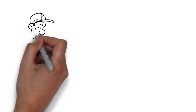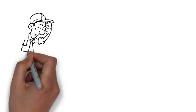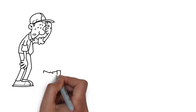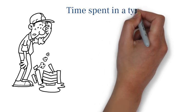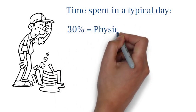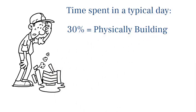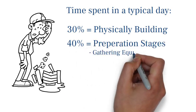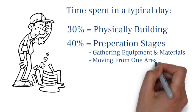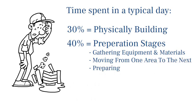Of course, it's hard to obtain completely accurate data on the actual productivity of construction workers. But in general, it has been observed that in an average day, a typical worker will spend 30% of their time physically building. 40% of time is spent on the preparation stages such as gathering equipment and materials, moving from one area to the next and preparation to actually carry out tasks. The remaining 30% is spent idling.